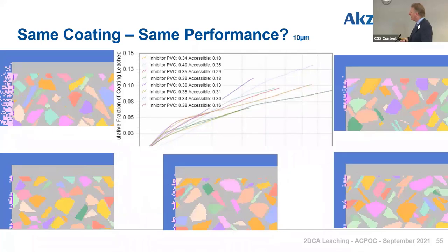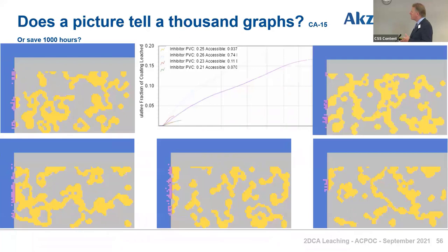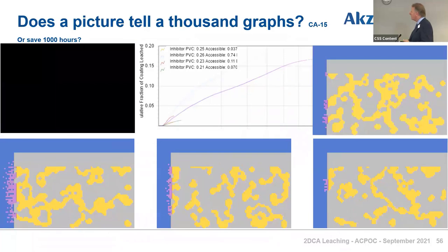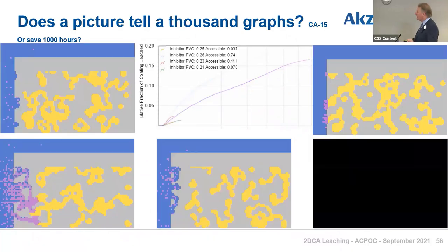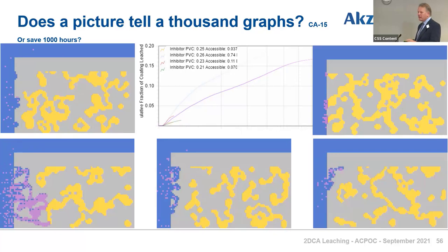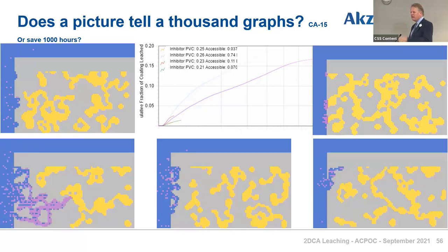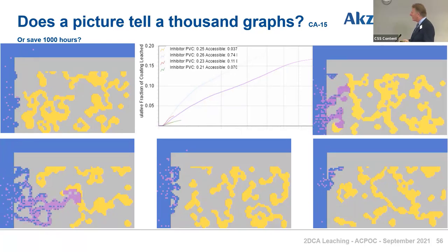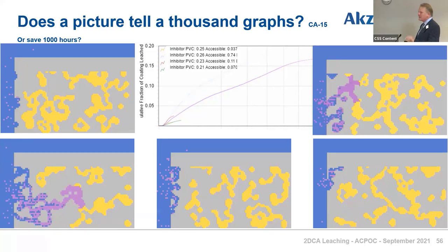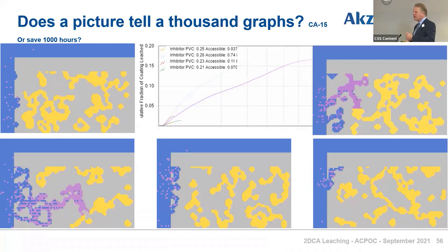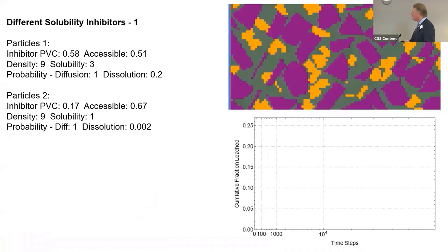This is the sort of computer experiment you can do easily that would take people in the lab an awful lot of time. Repeating five coatings in the lab is a lot of work; doing this is obviously very quick. The question is what we're getting out of it, and what I've said is that we're getting insights.